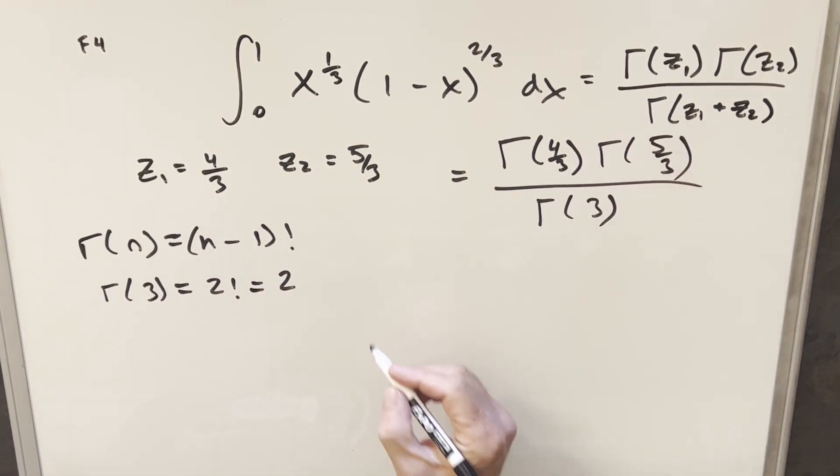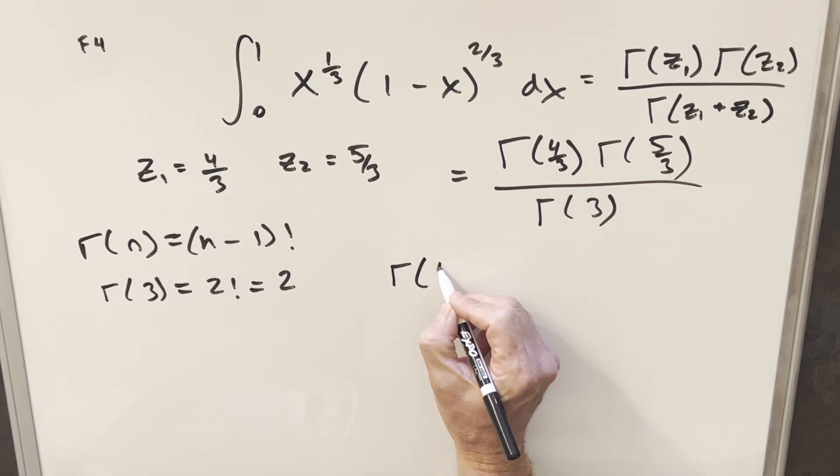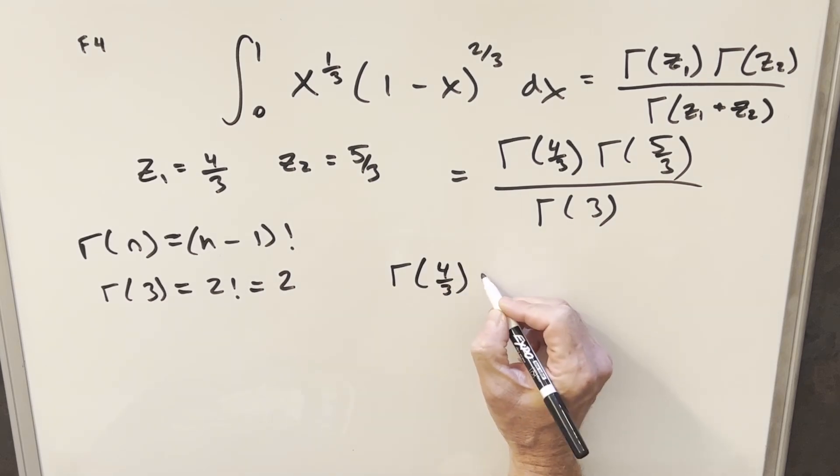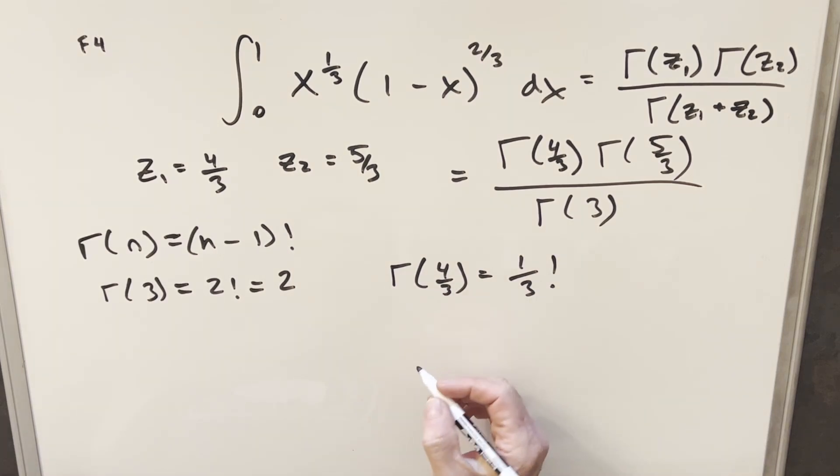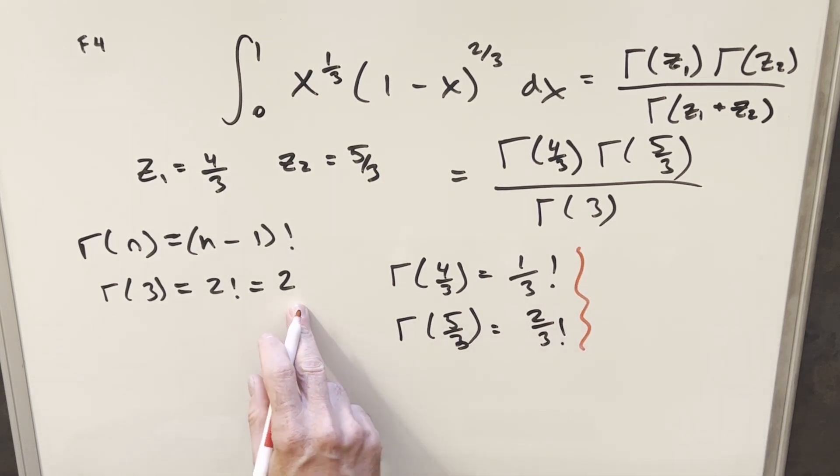Now for gamma of 4/3 and 5/3, this is maybe a little less familiar. For gamma of 4/3, this is going to be the same thing as 4/3 minus 1, or 1/3 factorial. And for gamma of 5/3, doing the exact same thing, 5/3 minus 1, this is going to be the same thing as 2/3 factorial. And of course, these two values are a little harder to work with than this which comes out to a nice integer, but we still have some things that we can do.